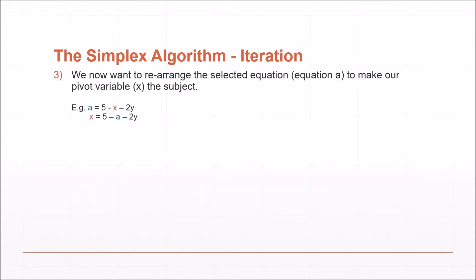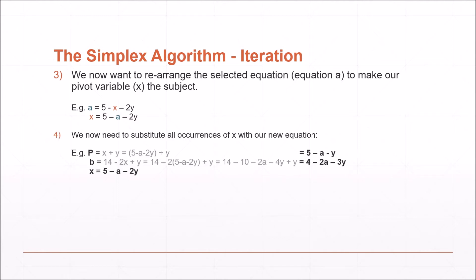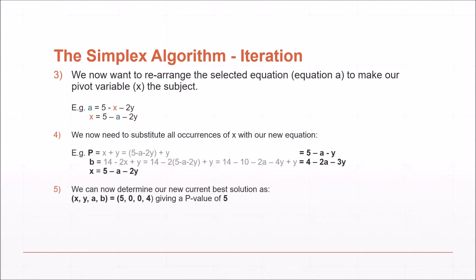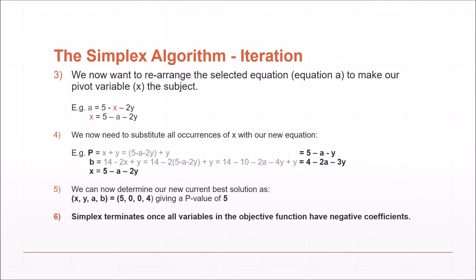We now rearrange the selected equation — equation a — to make the pivot variable x the subject. Once we have done this, we substitute 5 minus a minus 2y for all occurrences of x. At this point x has become a basic variable and a has become a non-basic variable. We determine our new best solution by setting all non-basic variables to zero, giving us x equals 5 and b equals 4. The simplex algorithm terminates once all variables in the objective function have negative coefficients.